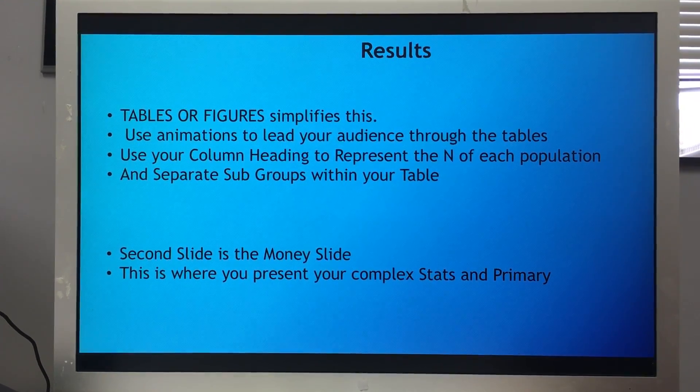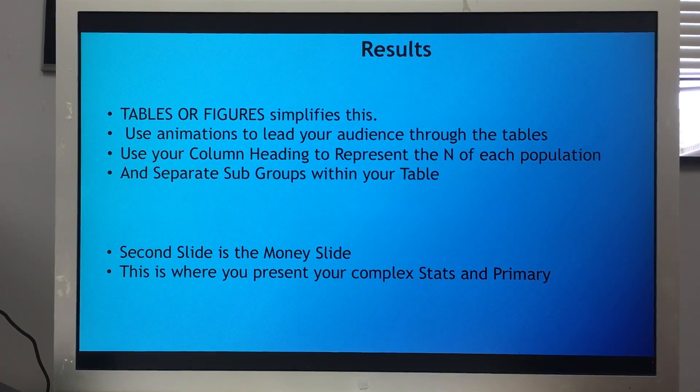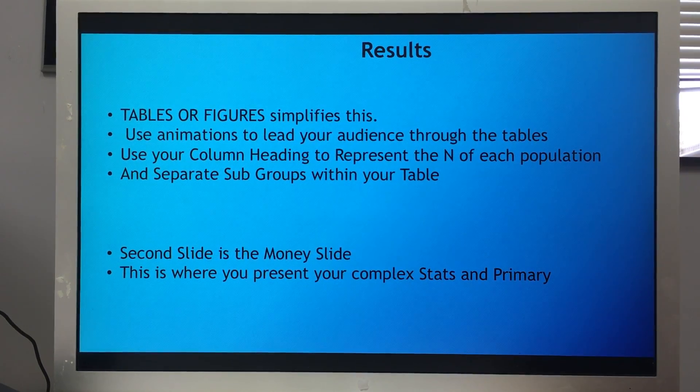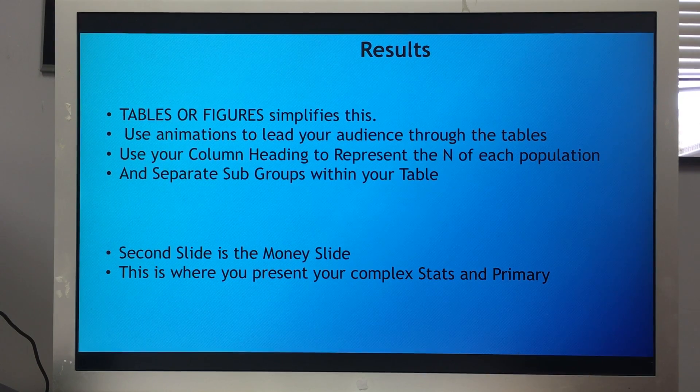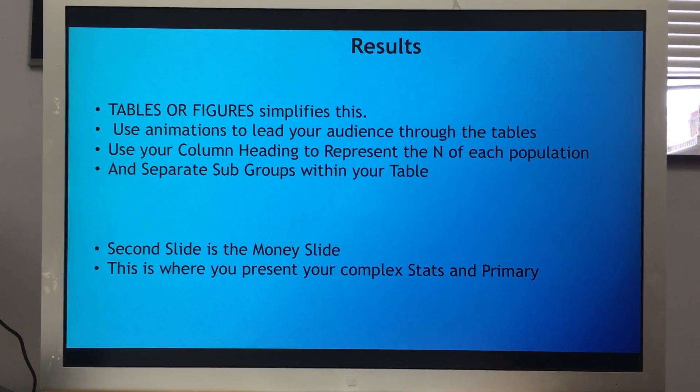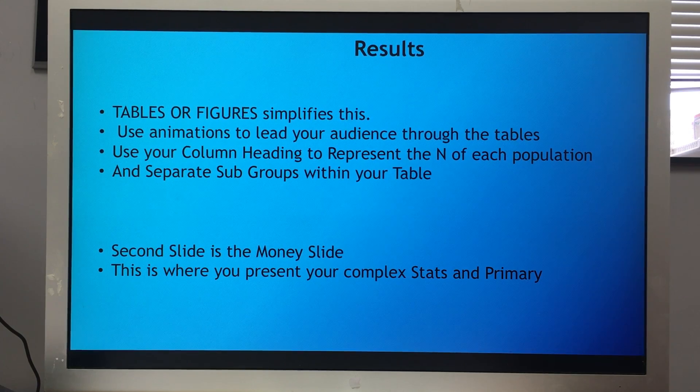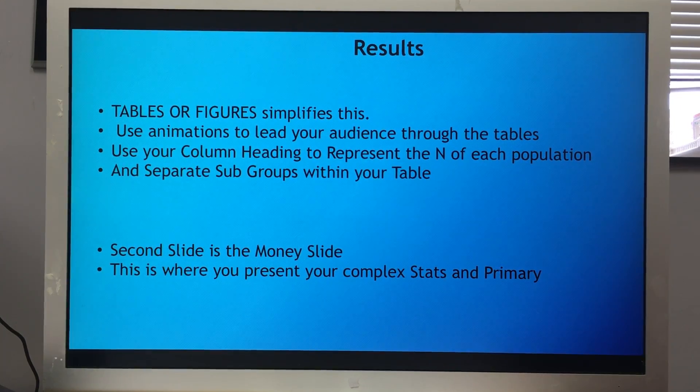This brings us to our results—the two most important slides. Tables or figures help simplify this. Use animations to lead your audience through the tables. Use your column heading to represent the N of each population—I'll show you what this means—and separate subgroups within your table. The second slide is the most important slide of the results. It is your money slide. This is where you present your complex stats and your primary outcomes.